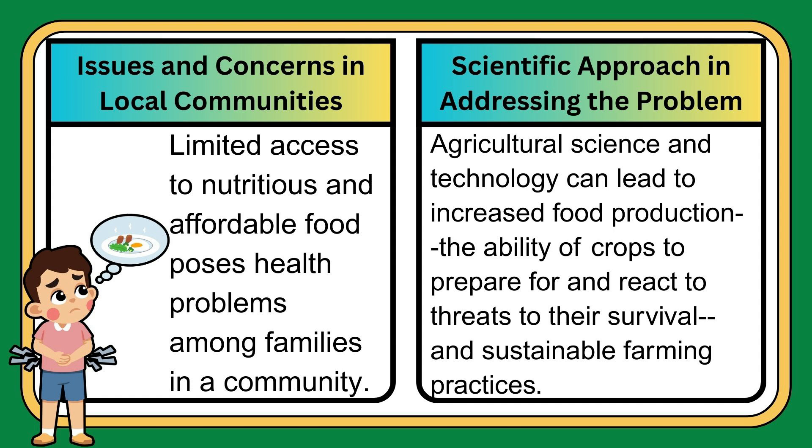Number four: limited access to nutritious and affordable food poses health problems among families in a community. Scientific approach in addressing the problem: agricultural science and technology can lead to increased food production, the ability of crops to prepare for and react to threats to their survival, and sustainable farming practices.